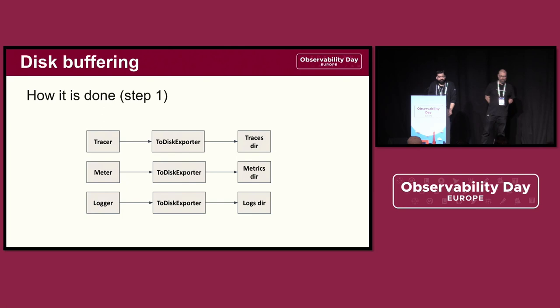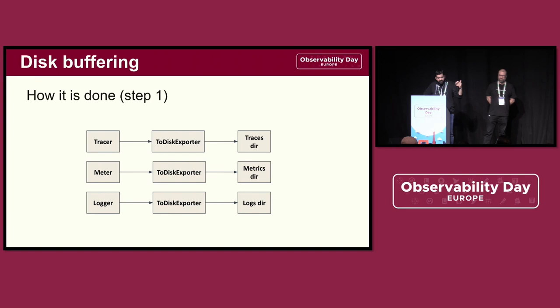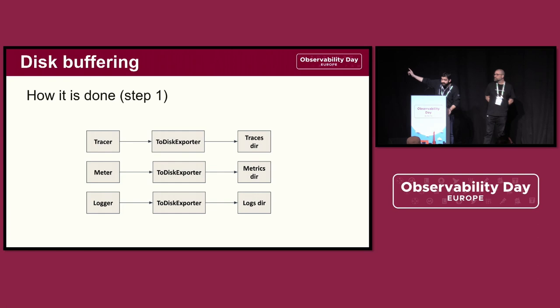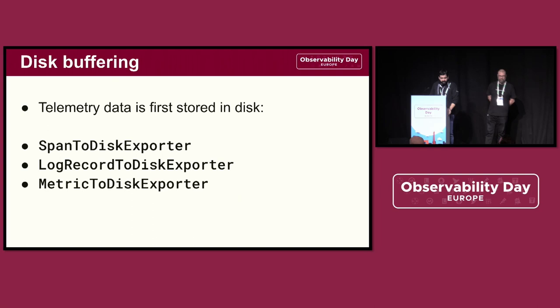The way we do this is that when setting up OpenTelemetry in the OTel Android project, we configure an exporter for each of the signals sent by the agent. We call them the to-disk exporters. The tracers, meters, and logger all have these to-disk exporters, which will be the first exporter that the application sends data to. Each type of signal has its own exporter, and each exporter stores the data in a specific folder just for that signal.